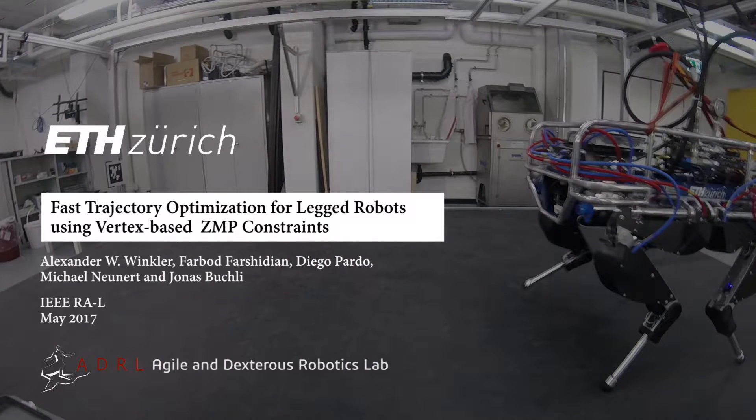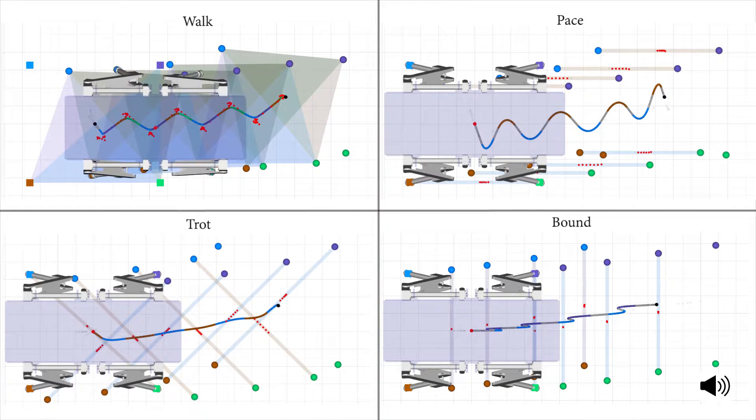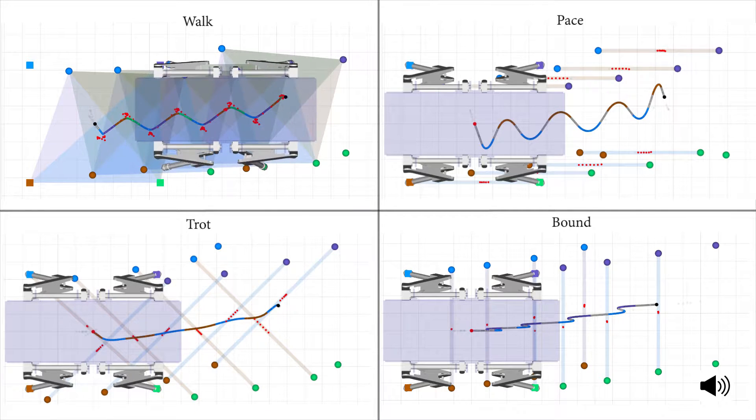This video shows motions generated for a quadruped robot using trajectory optimization. A goal position for the center of mass is specified and the optimal body motion and footholds are found.